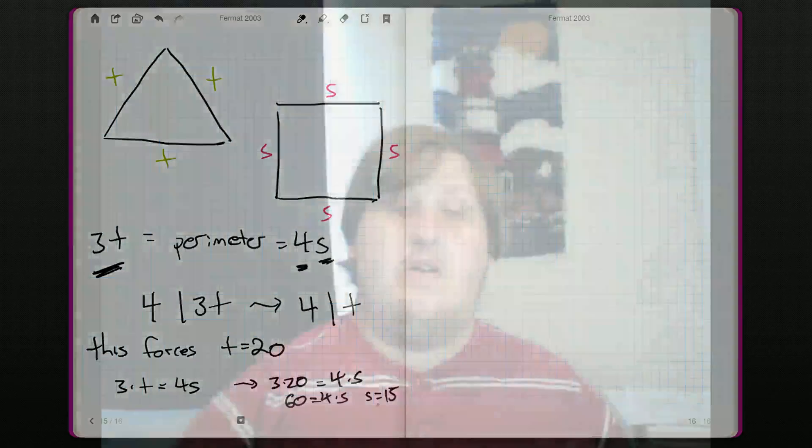I suppose another way to do this question is, we know 3t is equal to 4s. We can get that pretty quickly. And then we can say, well, we're only given 5 possibilities. You know, a was 1. What if t is 1? Can we solve for s as an integer?